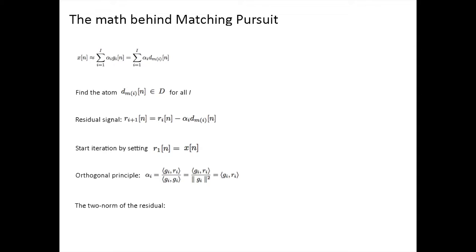The two norm of r i plus 1 of n can then be expressed as such, which can be minimized by maximizing the norm of alpha.